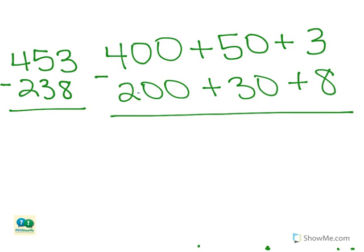We always start subtracting in the ones place, so we need to solve 3 minus 8. Because 3 is less than 8, we can't solve this problem, so we need to borrow from the tens. We can subtract a 10 from 50, and we are left with 40 in the tens place.